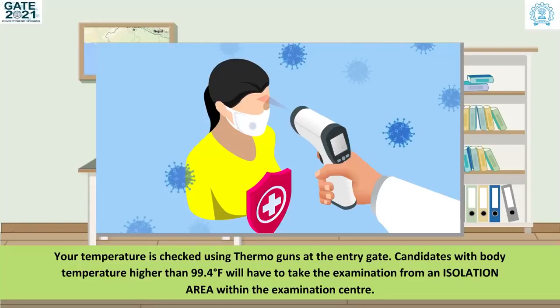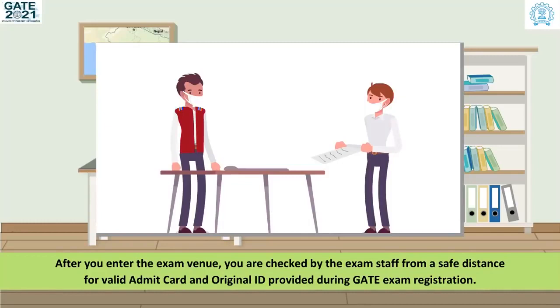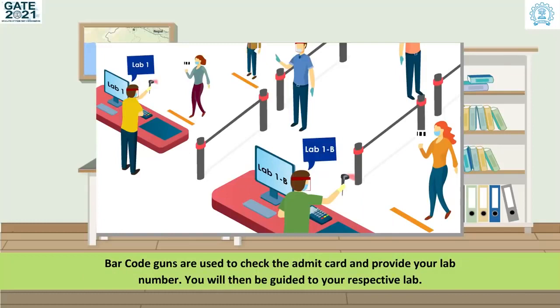Candidates with body temperature higher than 99.4 degrees Fahrenheit will have to take the examination from an isolation area within the examination center. After you enter the exam venue, you are checked by the exam staff from a safe distance for a valid admit card and original ID provided during GATE exam registration. Barcode guns are used to check the admit card and provide your lab number. You will then be guided to your respective lab.